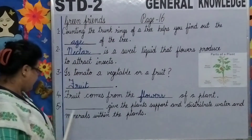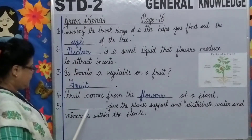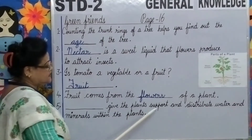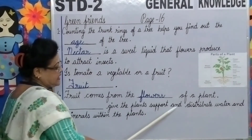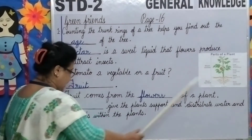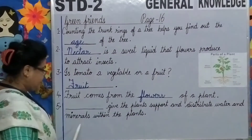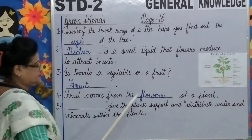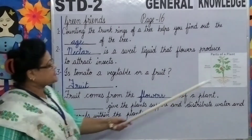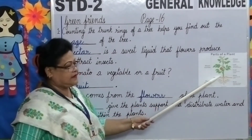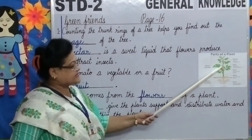Number 5: Blank gives the plants support and distributes water and minerals within the plants. What is giving support to the plants, children? The stem.